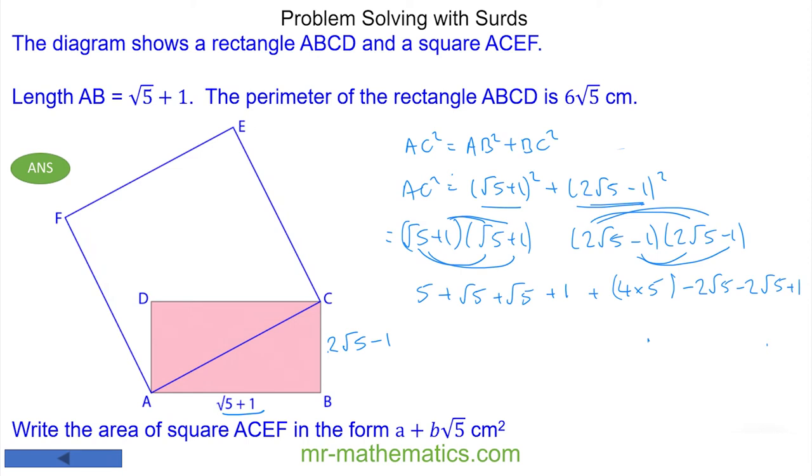So I can collect the like terms. We have 5 + 2√5 + 1 + 20 - 4√5 + 1. So I've got 5 add 1 is 6, add 20 is 26, add 1 is 27. I've got 2√5 taken away 4√5, so I've got minus 2√5.